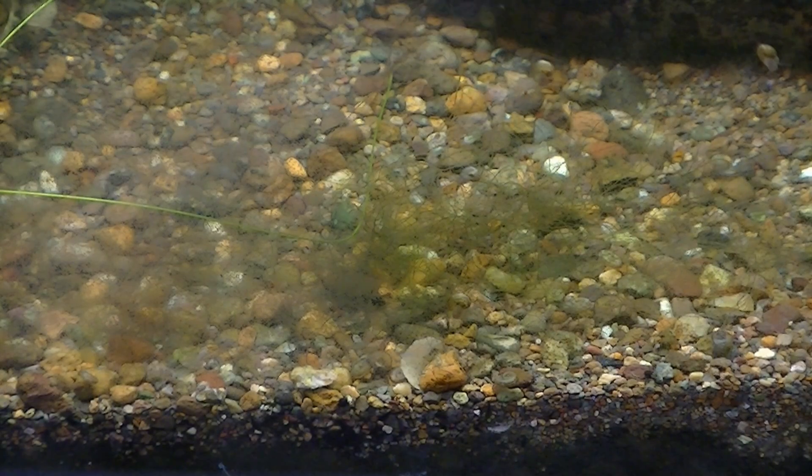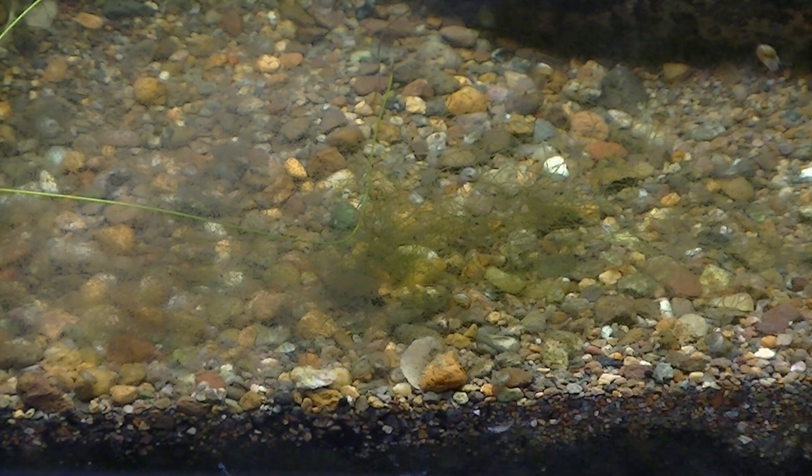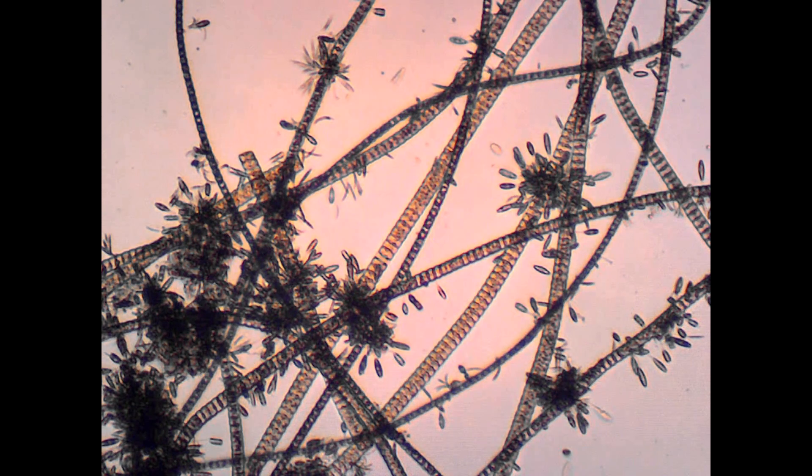Now let's take a look at some brown, hair-like algae found on the bottom of an aquarium. Right away, we notice a big morphological difference.